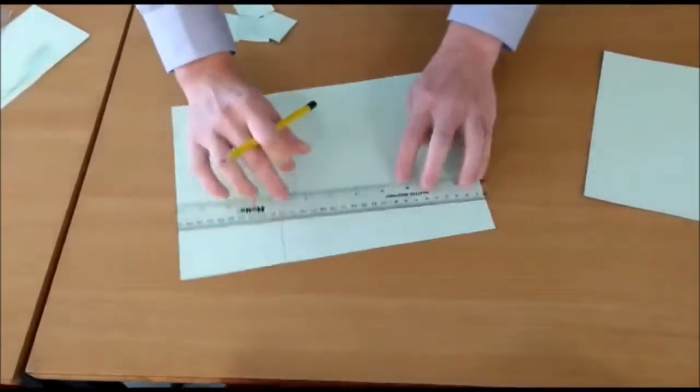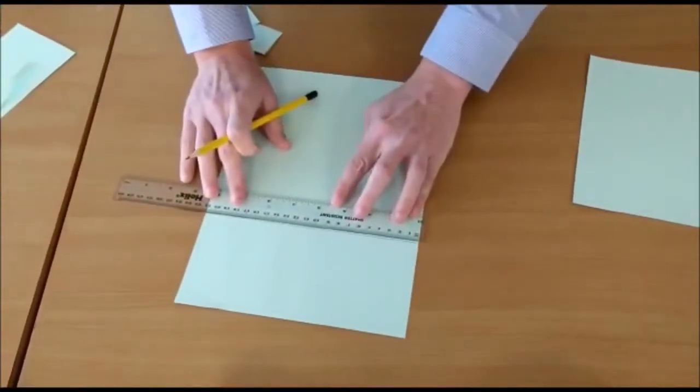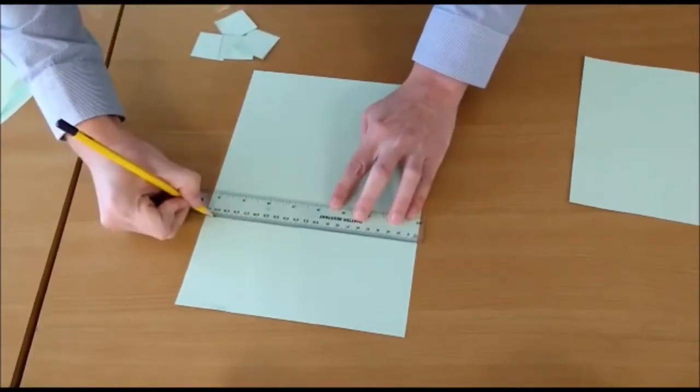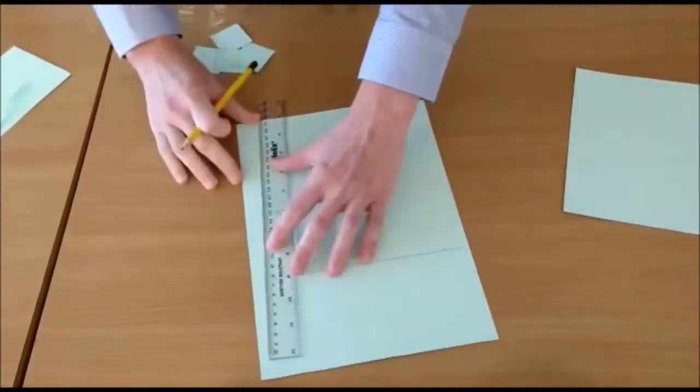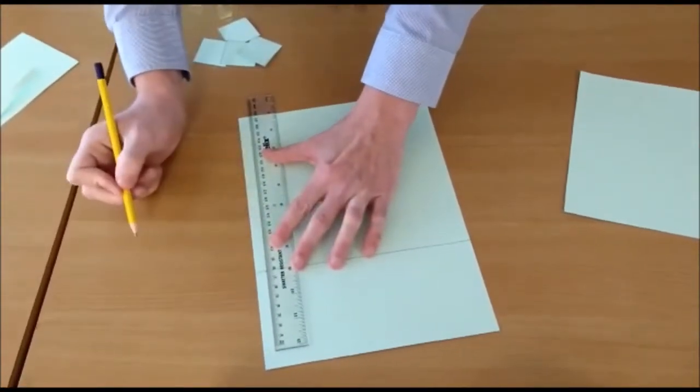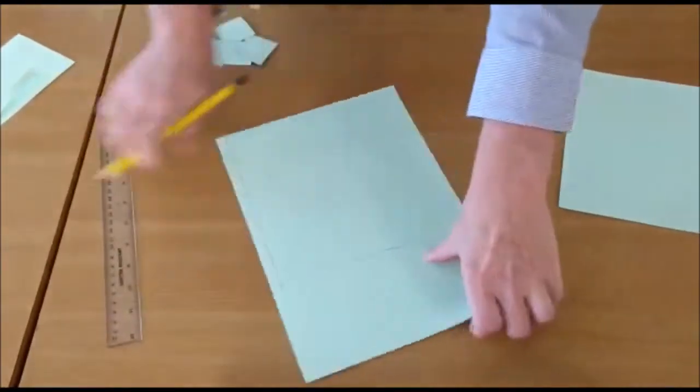And from there, I'll just double check that is 20cm. Yes, it is. So I'm measuring 20cm along that line and put the marker there. And then draw my other line that's going to be parallel to the edge of the paper, well card. Then, I'm going to cut that square out. And hopefully, we should end up with something like this.